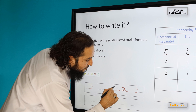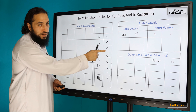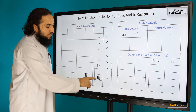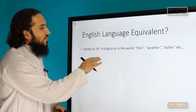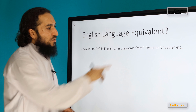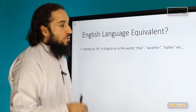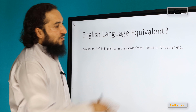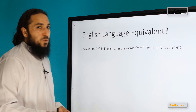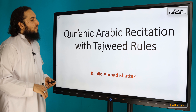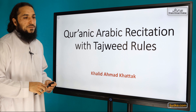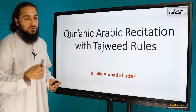For transliteration purposes, we will be using 'th' with an underscore, because we've already been using 'th' for Tha. But for Thal, we will be using th-underscore. The English equivalent is 'th', as in the word 'that', or 'weather'. So these are the English equivalents for the sound Th. This is the end of this session. We will see you in the next session insha'Allah. Until next session — Assalamu alaykum wa rahmatullahi wa barakatuh.